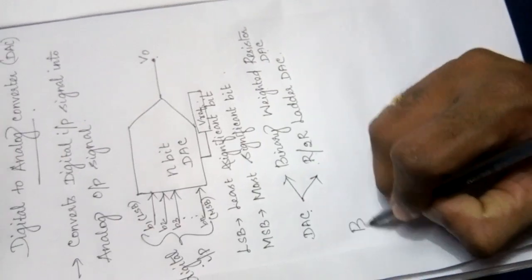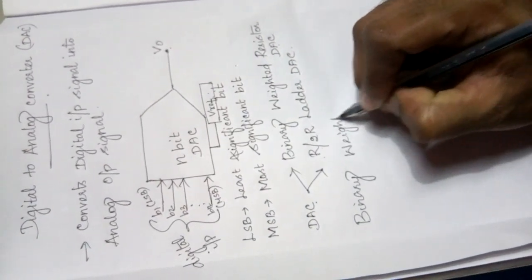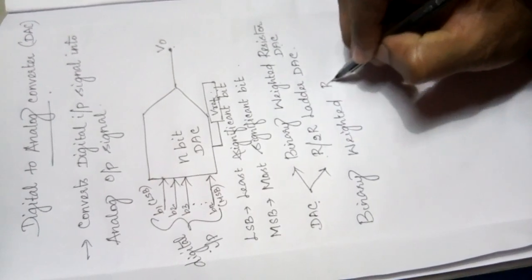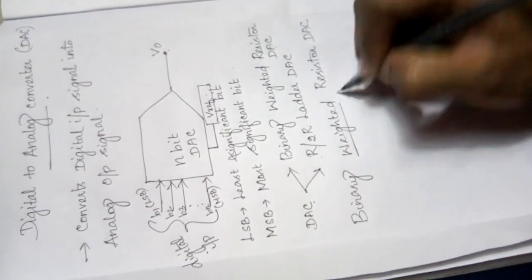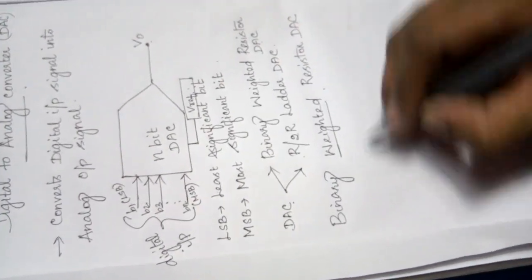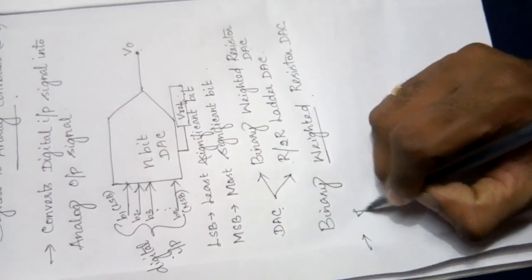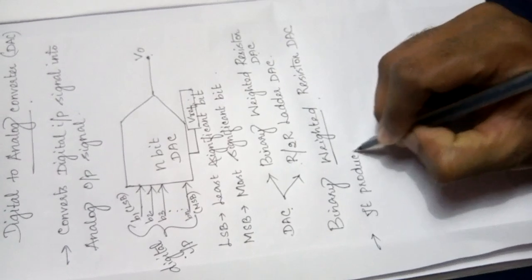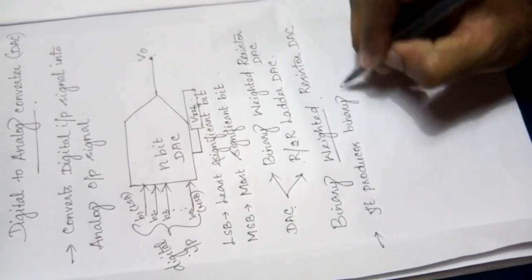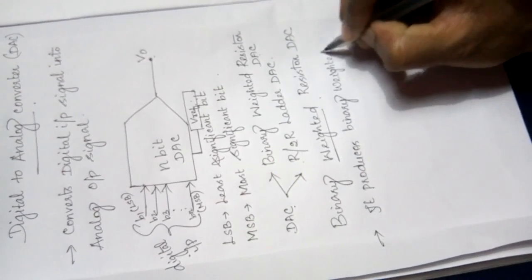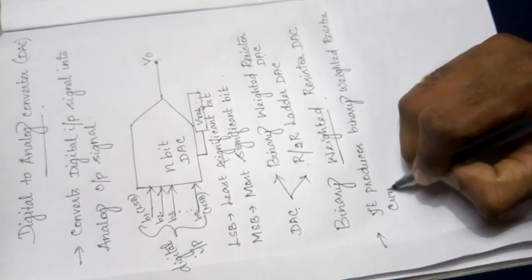First, let us look at the Binary Weighted Resistor DAC. It produces binary weighted resistor currents.